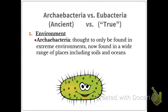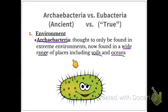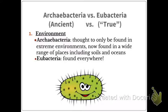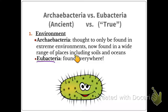Archaeobacteria versus eubacteria: archaeobacteria is thought of as 'ancient bacteria,' and eubacteria as 'true bacteria.' Archaeobacteria were originally thought to only be found in extreme environments, but now we've found them in a wide range of places, including soils and oceans. Eubacteria is found everywhere. Scientists originally called it ancient bacteria because they believed these were the first cells, living in extreme environments.